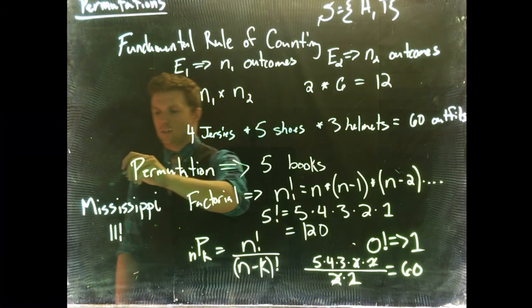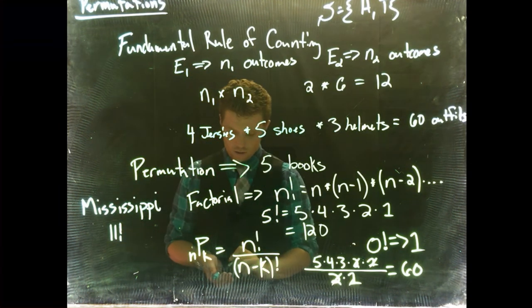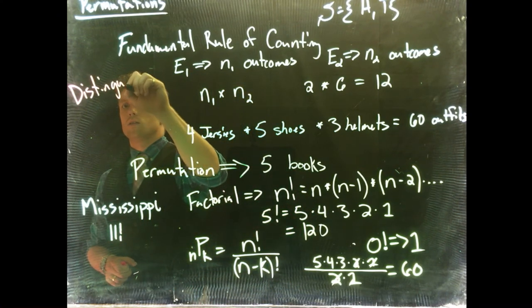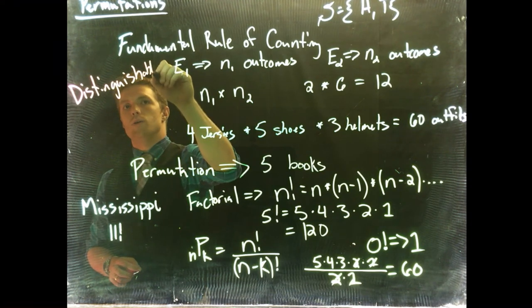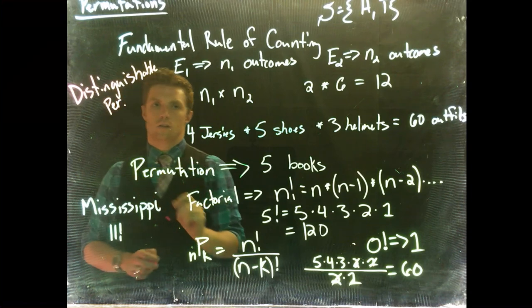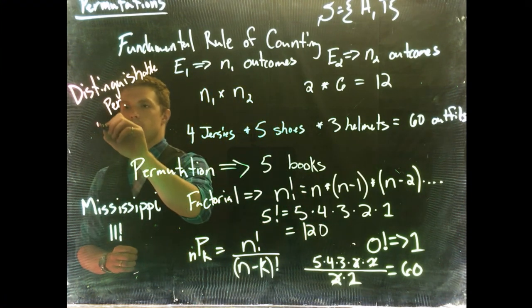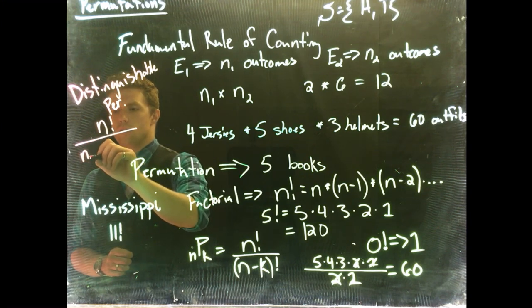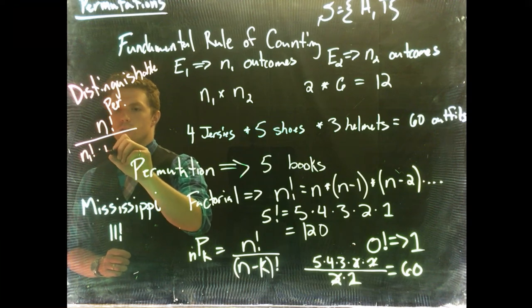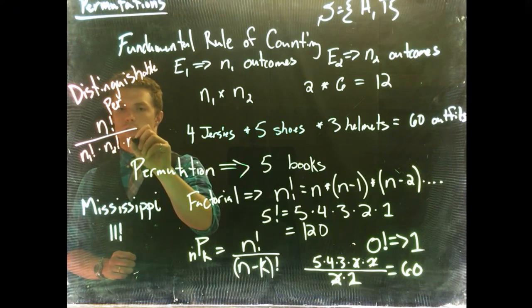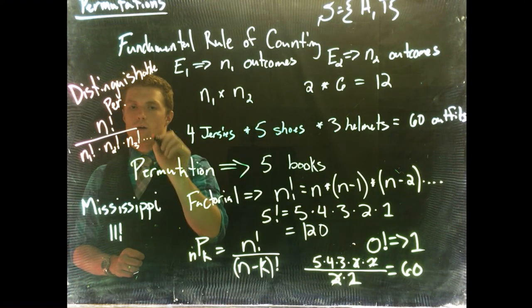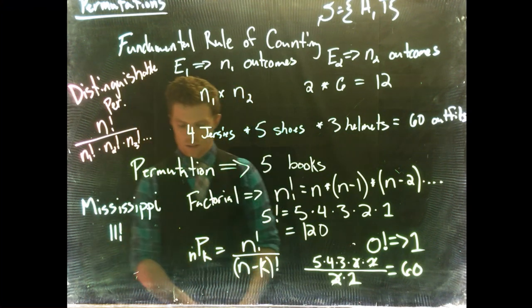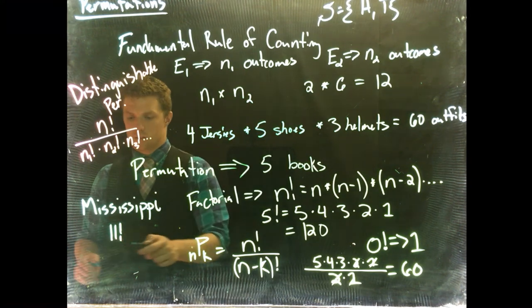You know, before we do this, let's get a generalized equation for this. So distinguishable permutations. Distinguishable permutations. And it's going to equal N factorial divided by N1 factorial times N2 factorial times N3 factorial, all the way to as many different outcomes as we have. All right. So let's take a look at this now. So we're back to our Mississippi example. We've got a total of 11 words, 11 letters.